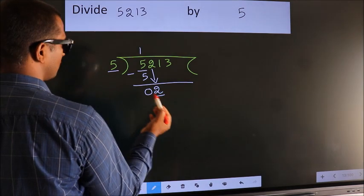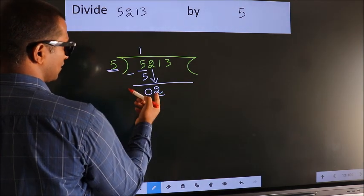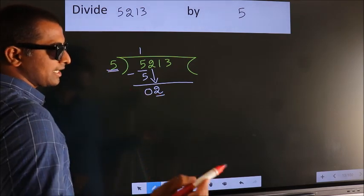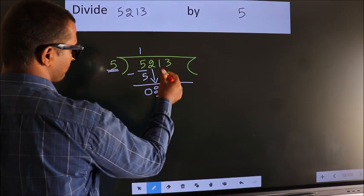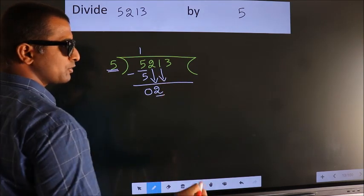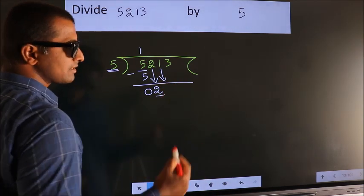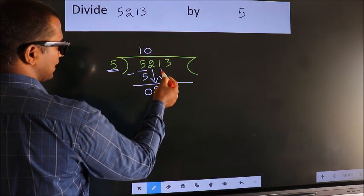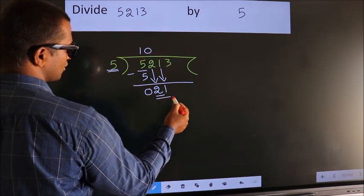Here we have 2. Here 5. 2 is smaller than 5. So we should bring down the second number. And the rule to bring down the second number is put 0 here. Then only we can bring down this number. So 21.